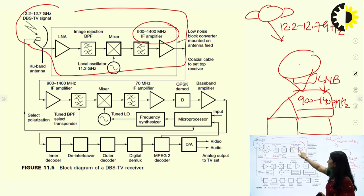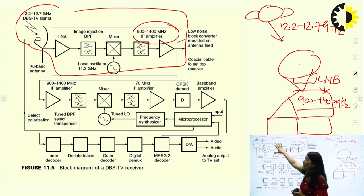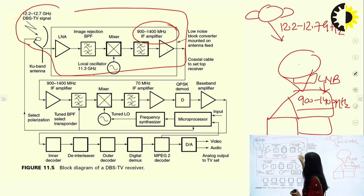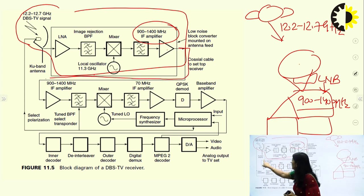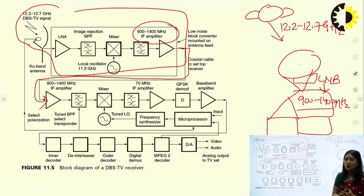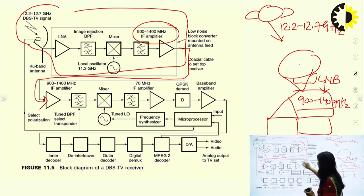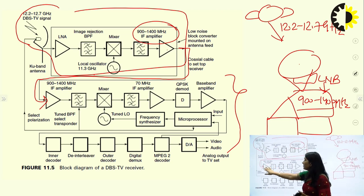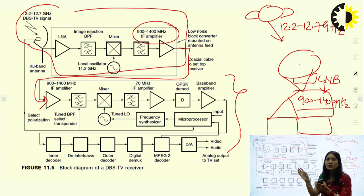This is the complete block diagram of the DBS TV receiver. The front end — the low noise block — receives the satellite signal at 12.2 to 12.7 gigahertz. At the dish antenna we have a low noise amplifier, which is always the first block in any RF receiver, to amplify the signal and reduce noise. Then we have an image rejection bandpass filter to remove unwanted signals. The mixer with the 11.3 GHz local oscillator down-converts the signal to 900 to 1400 megahertz. An IF amplifier stage and further amplification follow. This entire block is kept at the antenna feed. Then a coaxial cable carries the signal to the set-top box.